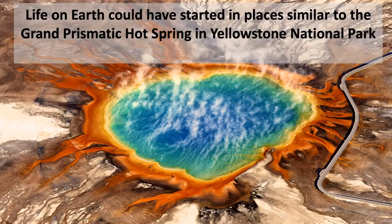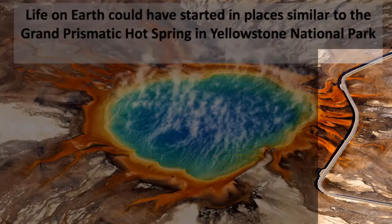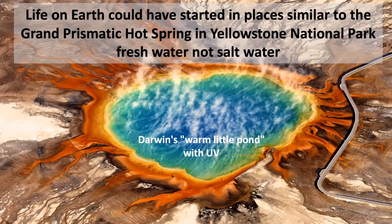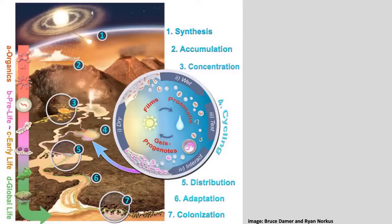The other alternative scenario for where life could have gotten started is in hot springs. They are at the surface — there's sunshine, there's air on top, as you can see in this picture with a road shown just for scale. This is not the same as hydrothermal vents where there's no air. It's a little like Darwin's warm little pond, and there's UV here.